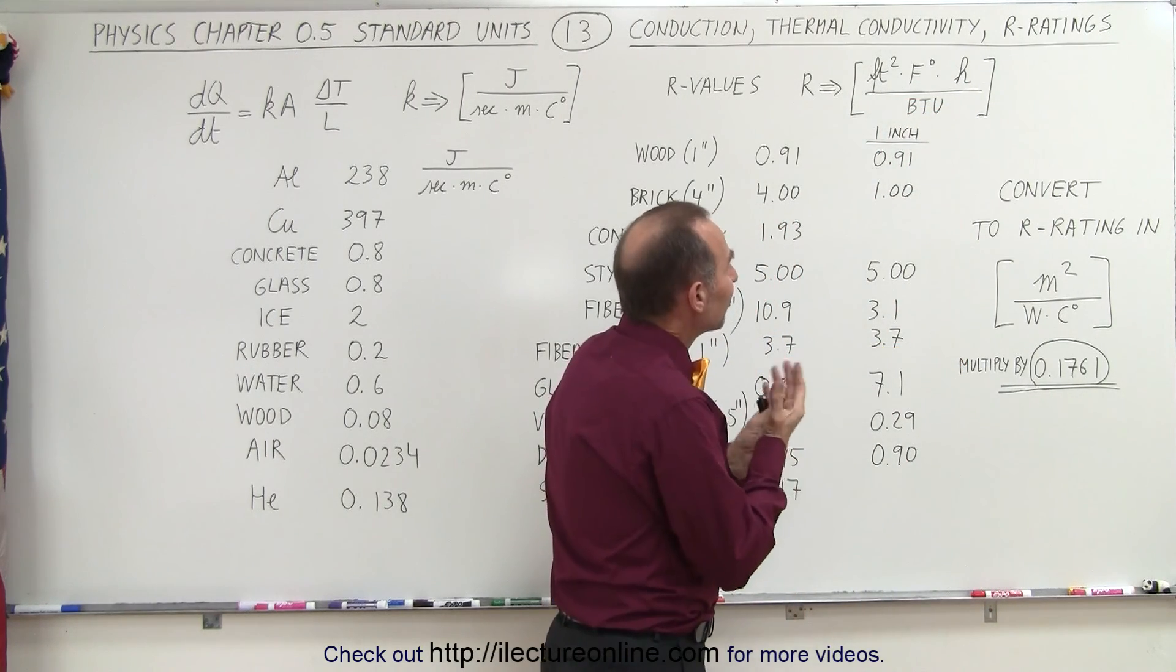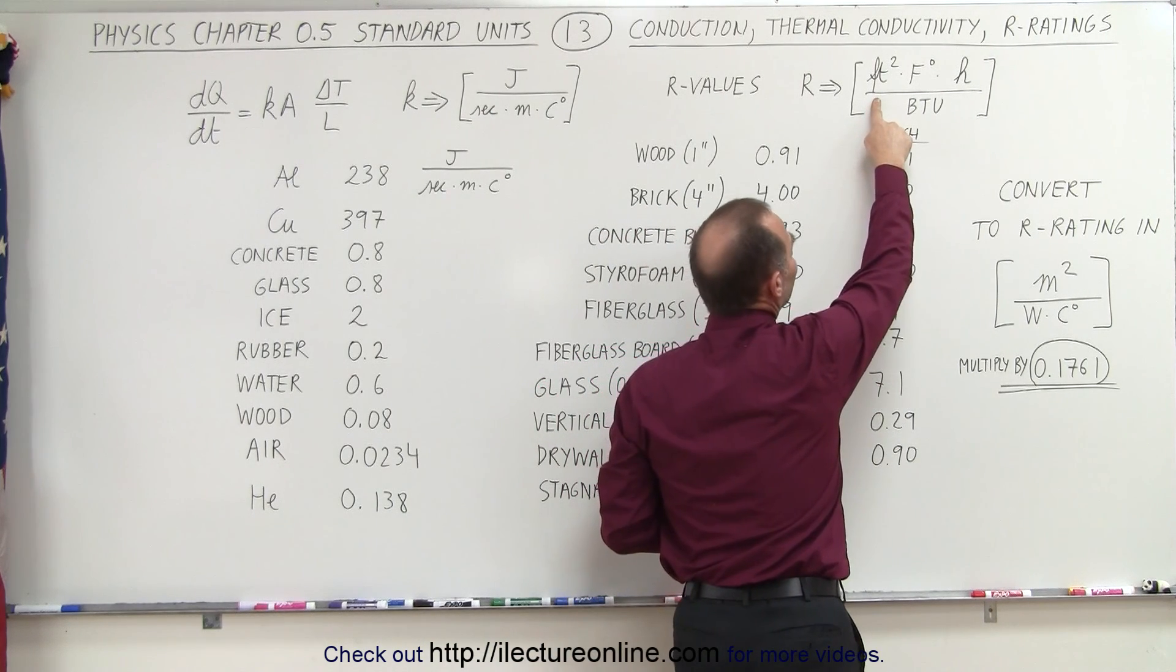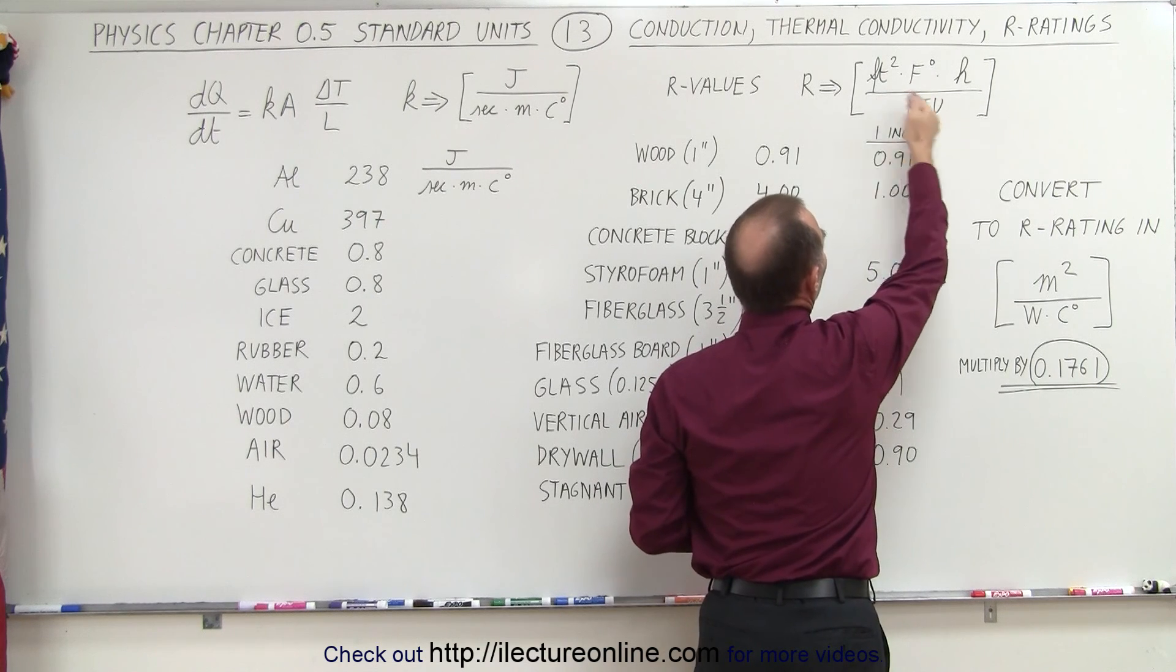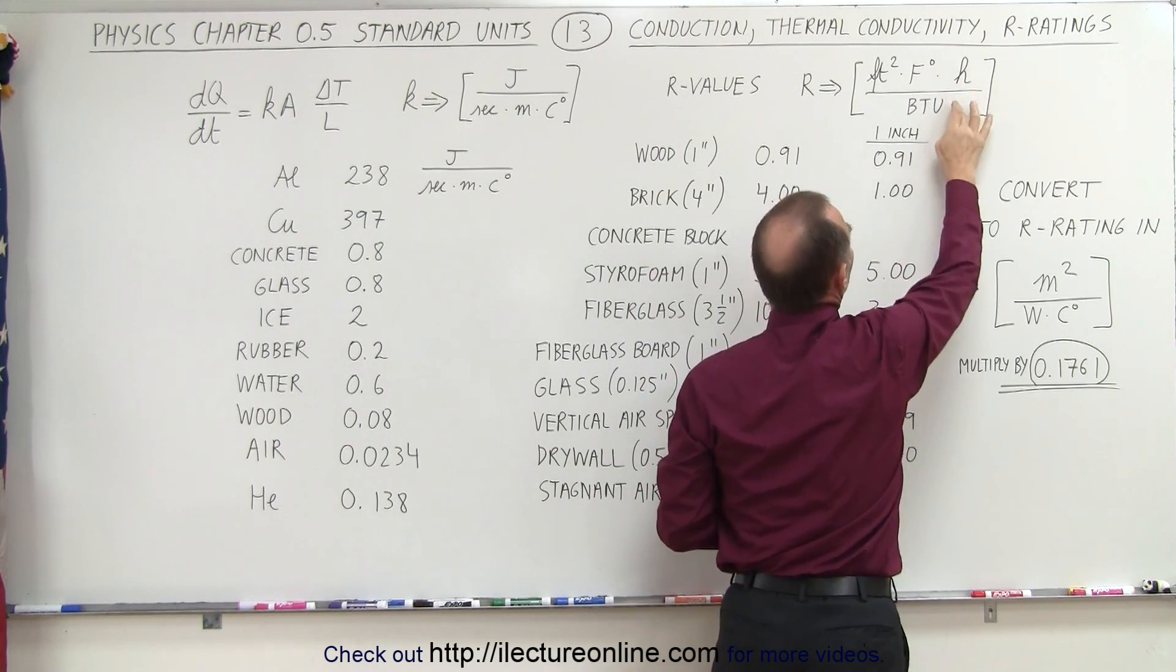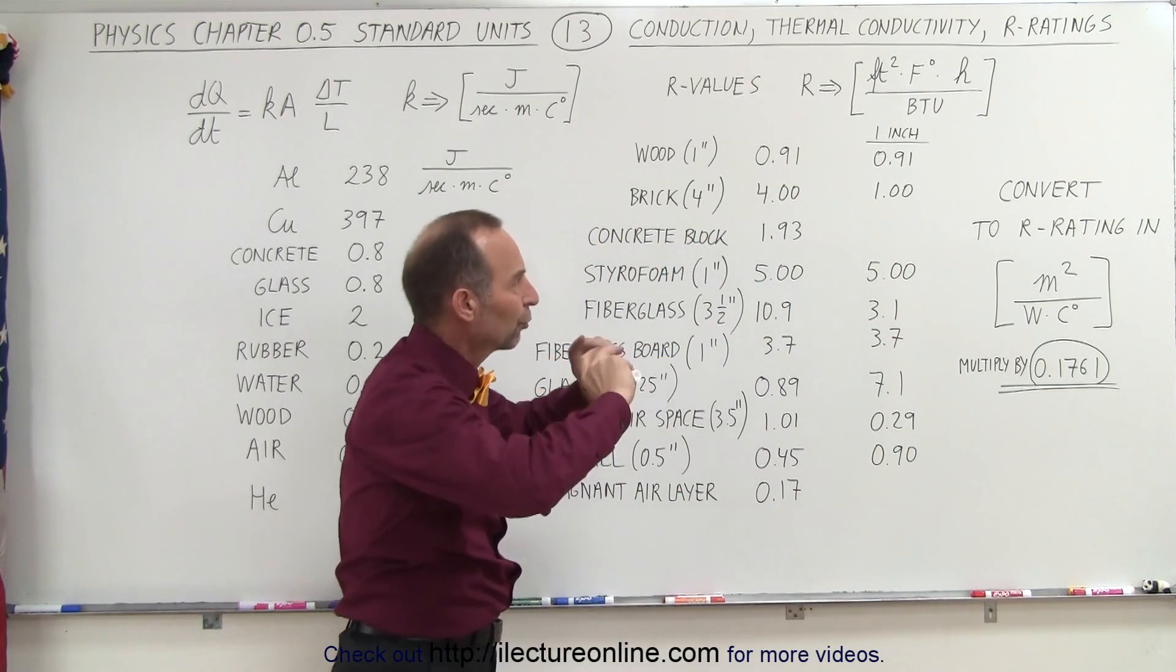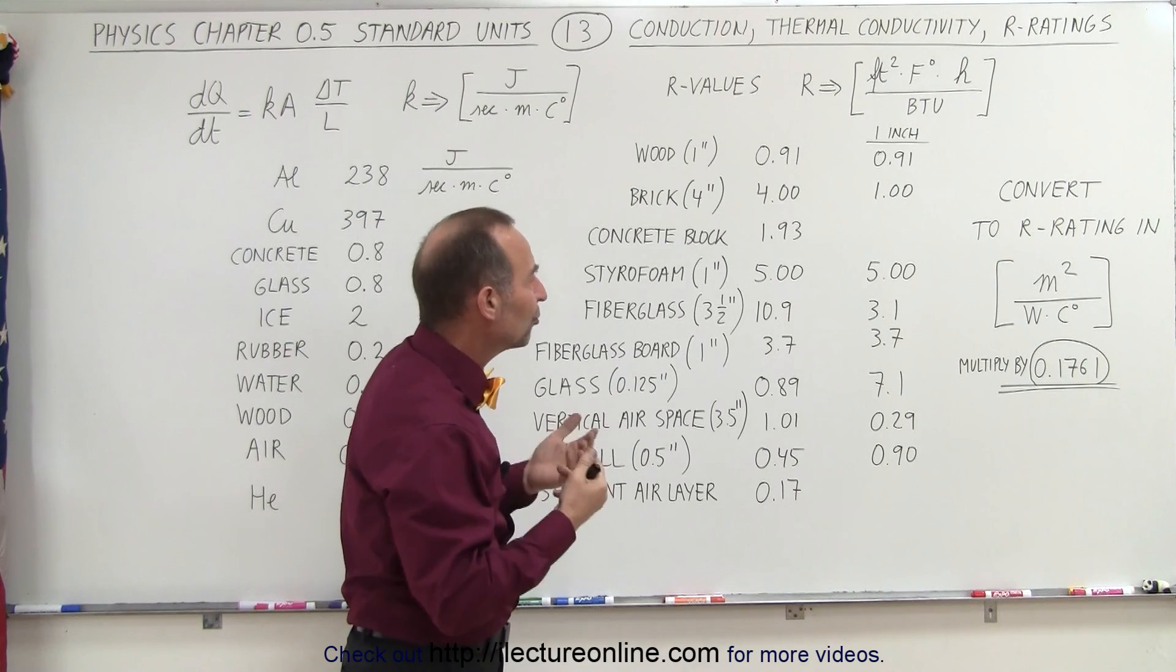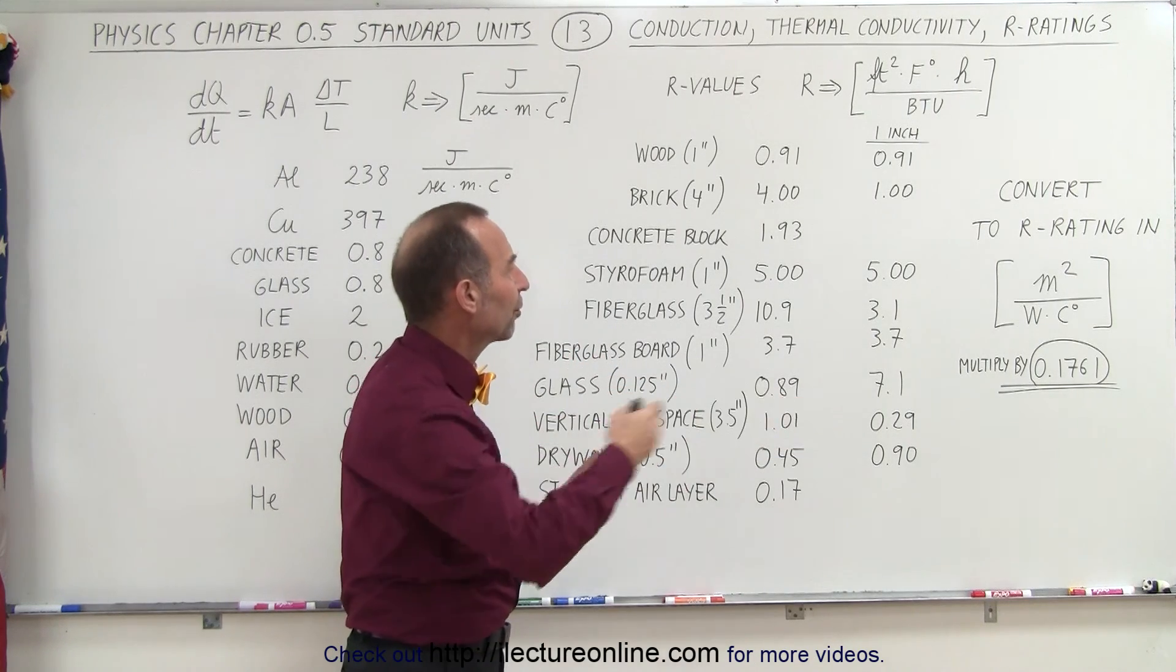What the units basically stand for is that for an area of one square foot and a temperature difference of one degree Fahrenheit on both sides of the wall, over a period of an hour, it will transfer one BTU. We have the inverse of that, which means the larger the number, the more it resists the transfer of heat.